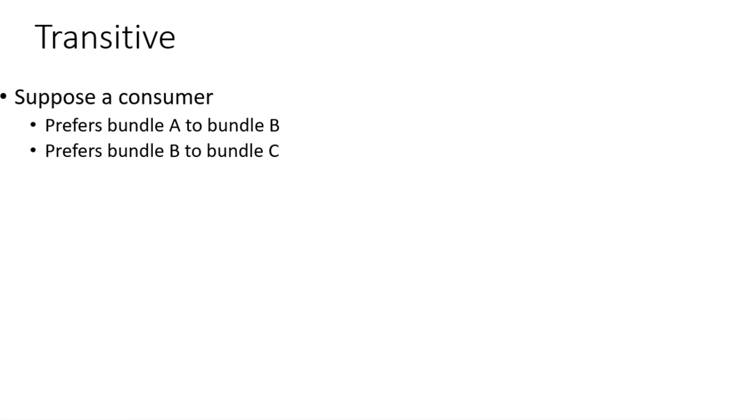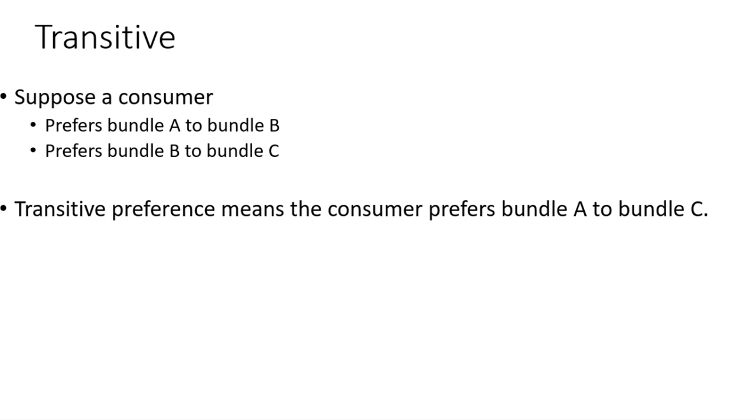The third axiom, transitive. Suppose the consumer prefers bundle A to bundle B and prefers bundle B to bundle C. The transitive preference means the consumer prefers bundle A to bundle C. So if A is greater than B and B is greater than C, it must be true that A is greater than C. This rules out indifference curves that cross.